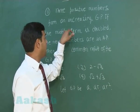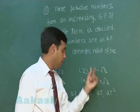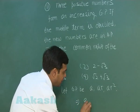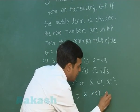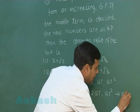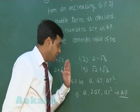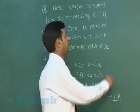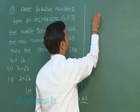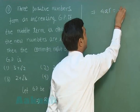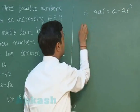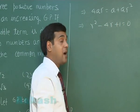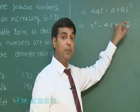Now, the question says if the middle term is doubled, means in place of ar, we write 2ar. Then a, 2ar, ar square form AP. Applying the formula for AP, that is twice the middle term equals first plus third: 4ar equals a plus ar square. Simplifying, we get a quadratic in r as r square minus 4r plus 1 equals 0.